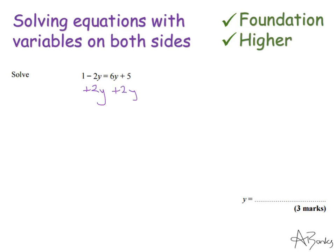Let's see what that leaves me with. On the left-hand side, I've got my minus 2y and add 2y, which cancel each other out to nothing. So I've just got 1. And on my right-hand side, I've got 6y add 2y. That's 8y and then plus 5 as well. So now I've got my simple equation to solve.